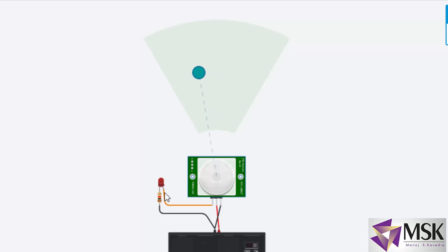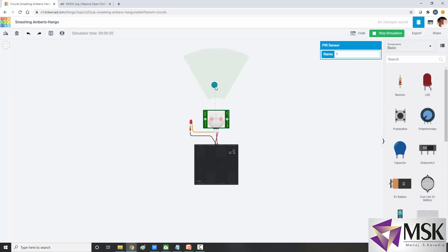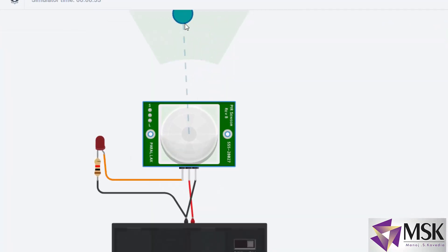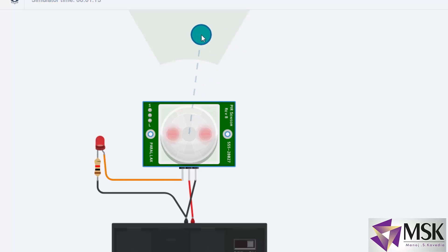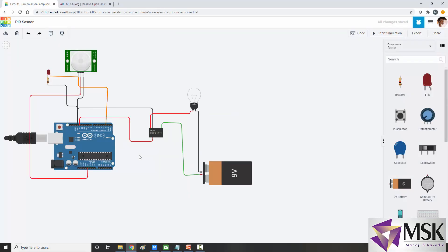Let me zoom in. Now you can see the LED is on, and after some time it is switching off automatically. So if the human is there within this range, it will detect and give output, but that will become low after some time. When there is no human being the output is low, and if somebody — a human, animal, or any warm body — comes within the range, it will detect and give output. Let's see the interfacing of the PIR sensor.